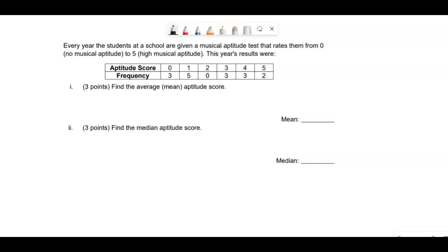Every year, the students at a high school are given a musical aptitude test that rates them from zero, no aptitude, to five, high musical aptitude. This year's results were in a frequency table.